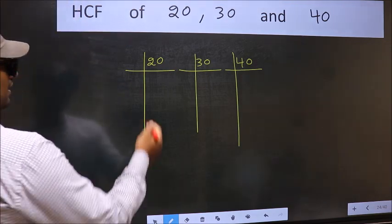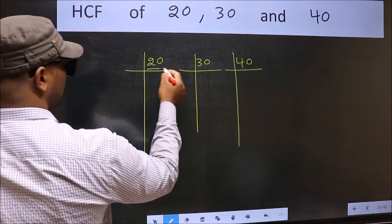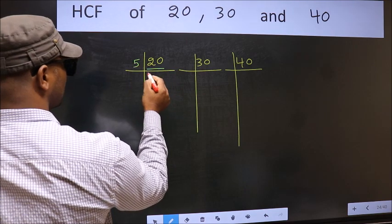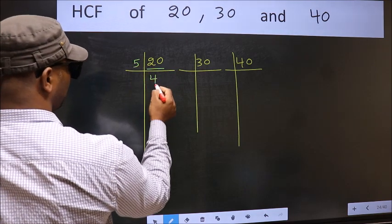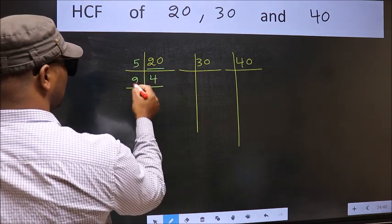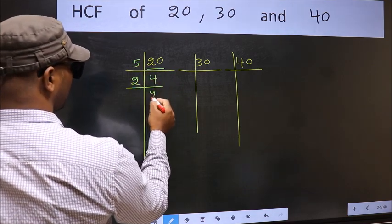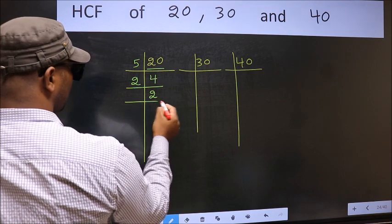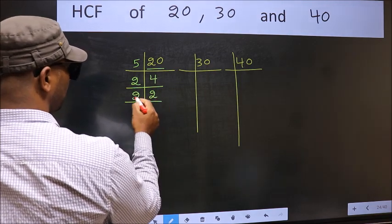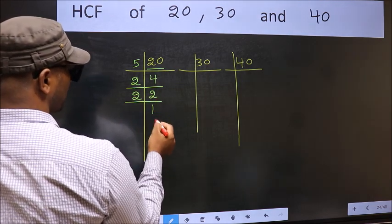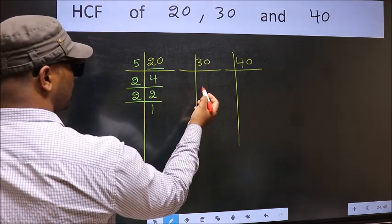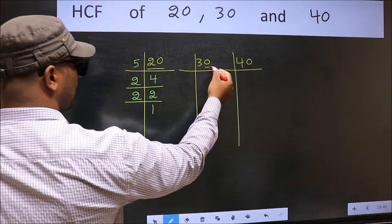Now here we have 20. 20 is 5 fours — 5 × 4 = 20. Now 4 is 2 twos — 2 × 2 = 4. Now 2 is a prime number, so 2 × 1 = 2.